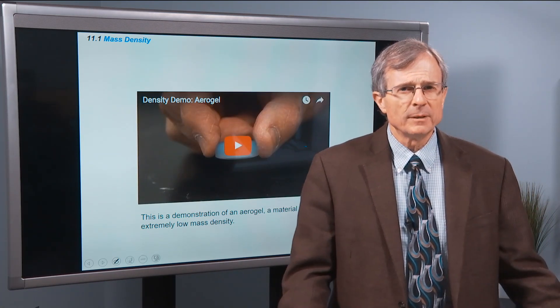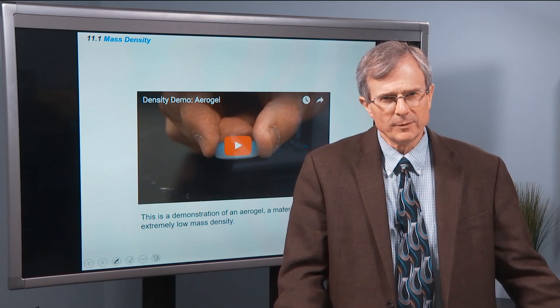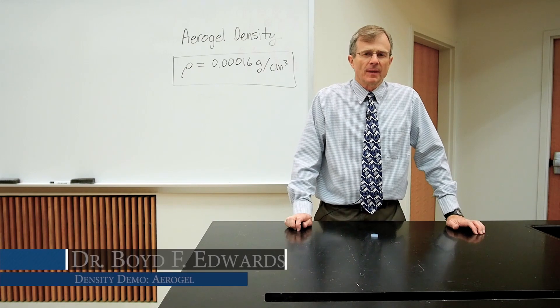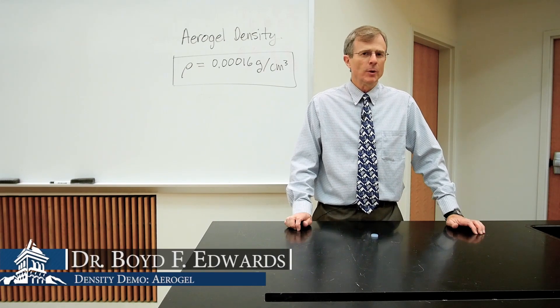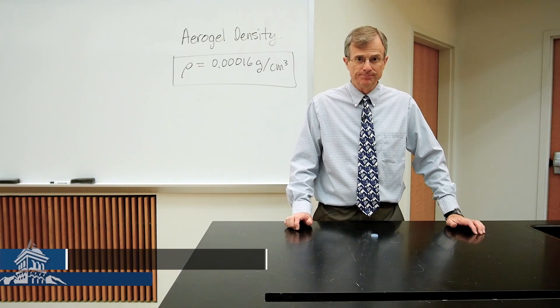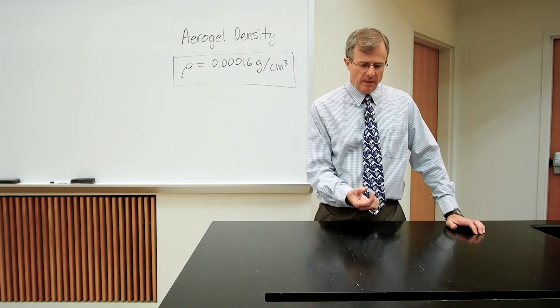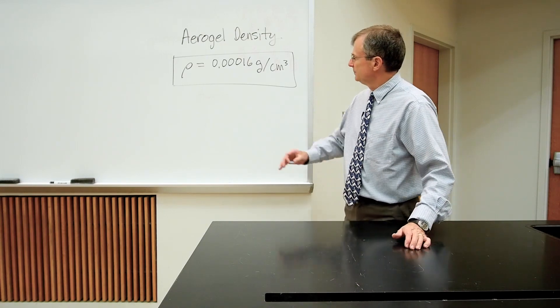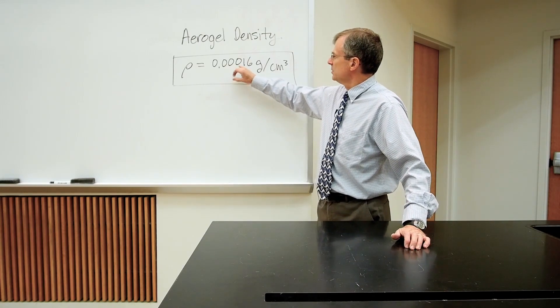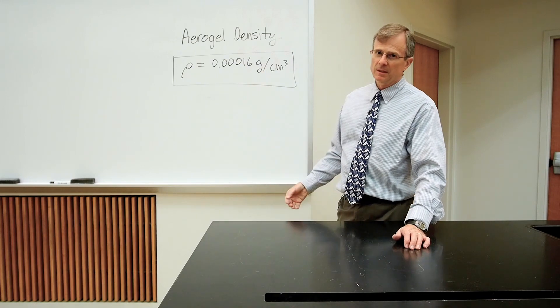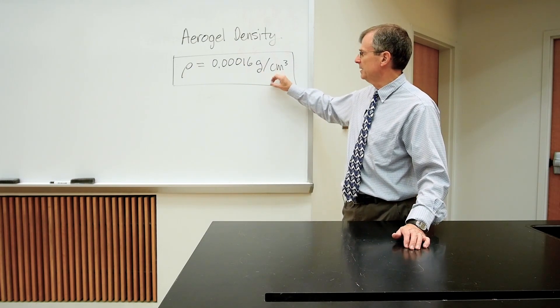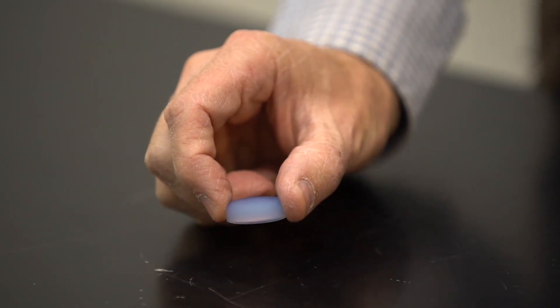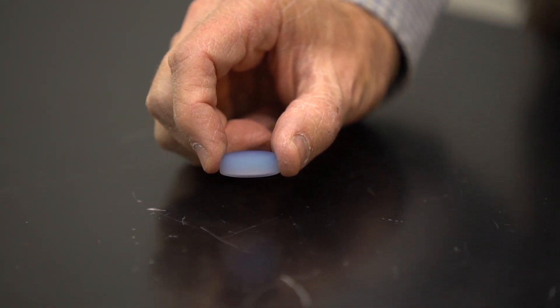This is a demonstration of an aerogel, one of the lightest solid substances known. Water has a density of about one gram per cubic centimeter. Aerogel has a density of 0.00016 grams per cubic centimeter. It's about 95% air, yet it's quite rigid. And you might be able to hear it when I drop it on the tabletop.